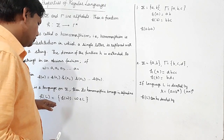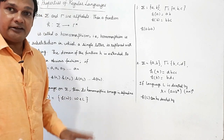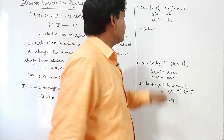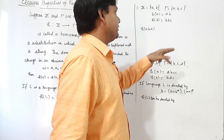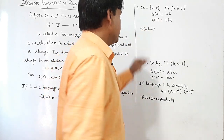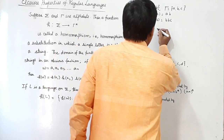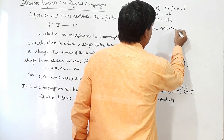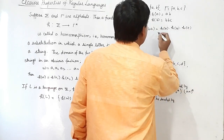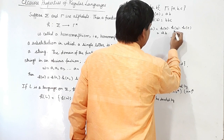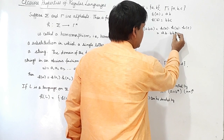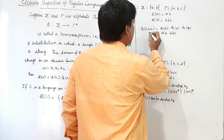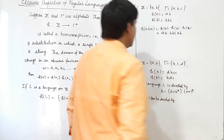If L is a language on sigma, then its homomorphic image is defined as h(L) = { h(w) such that w belongs to L }. For example, if sigma is {a, b} and tau is {a, b, c}, and h(a) = ab and h(b) = bbc, then h(ab) = h(a) concatenated with h(b), which is ab concatenated with bbc.